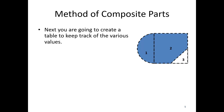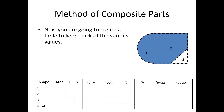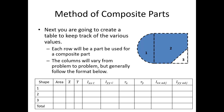Step number two: we're going to create a table to keep track of various values. This is an example of a table used to find the overall area moment of inertia about the x and y axes for a particular shape. Each row is going to be used for a part of the composite body — however many shapes you broke your body into. In this case, I had three different composite pieces, so I've got three different rows, as well as a total row at the bottom.